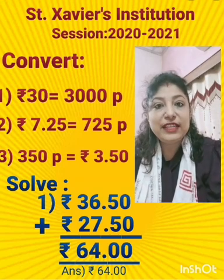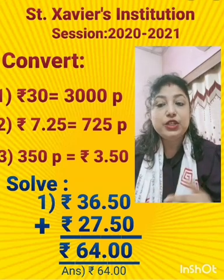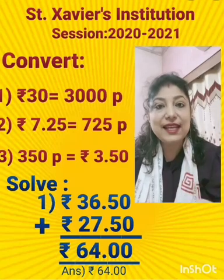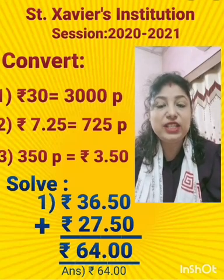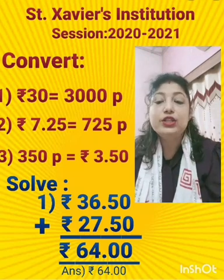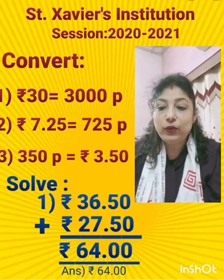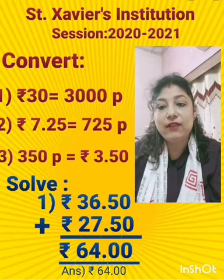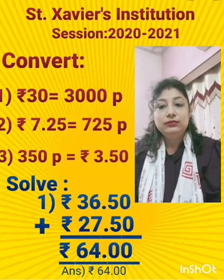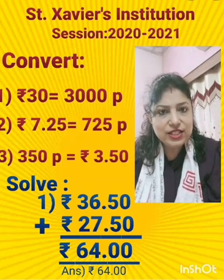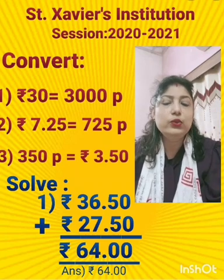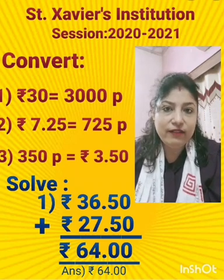350 paise — convert into rupees. Whenever you are converting paise into rupees, just put a point before the last 2 digits. So what you will get? Rupees 3.50. You have done these sums many a time, so I hope you can do the MCQ session very well.